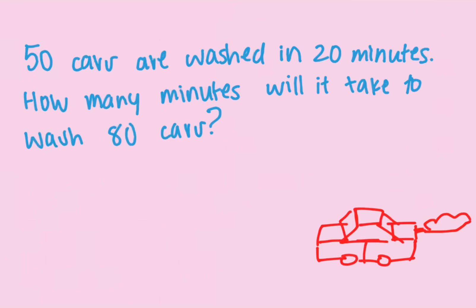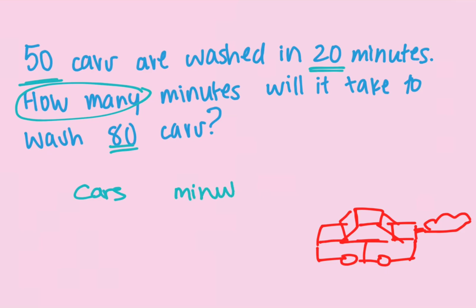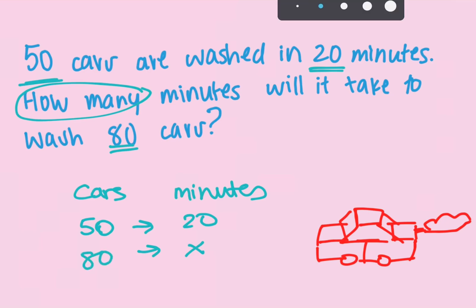Lastly: 50 cars are washed in 20 minutes. How many minutes will it take to wash 80 cars? This is a straightforward question — whenever you see three given values like 50, 20, and 80, and then a 'how many,' go straight to the box method. So: 50 cars in 20 minutes; set up cars in one area and minutes in the other.